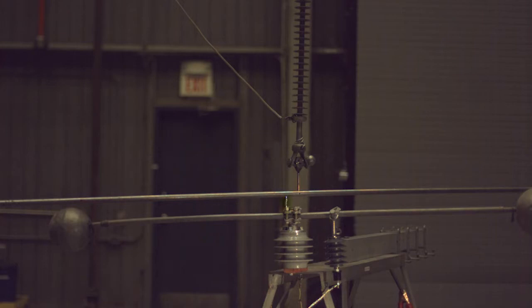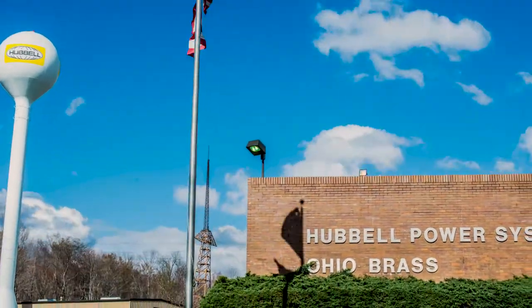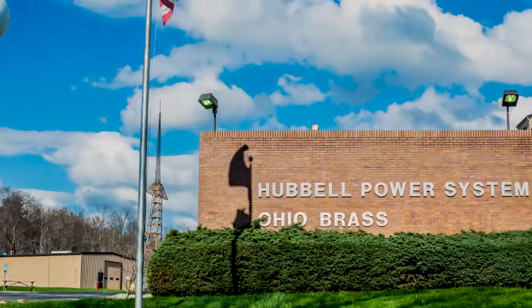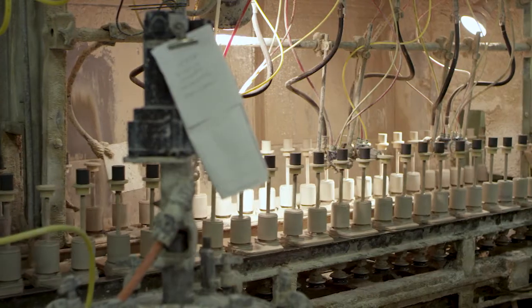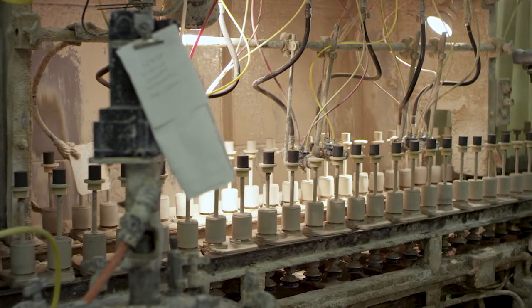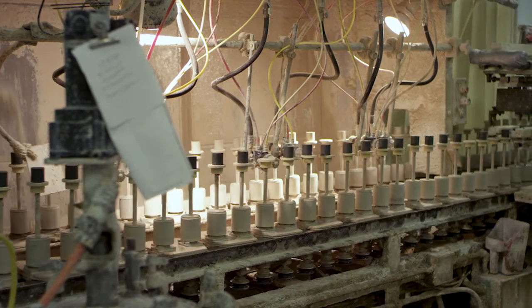An MOV can survive lightning strikes over and over so that power grid equipment is never affected. Hubble Power Systems acquired the Ohio Brass Company in 1978 and has produced millions of MOV discs since then for millions of surge arrestors on the power grid.